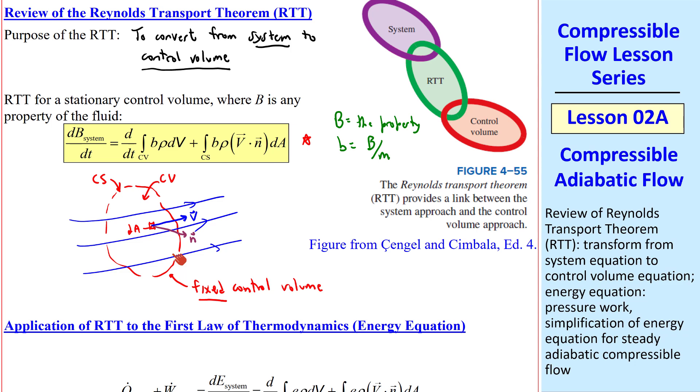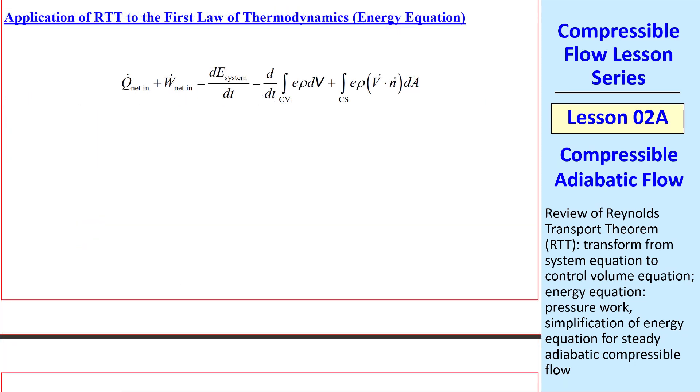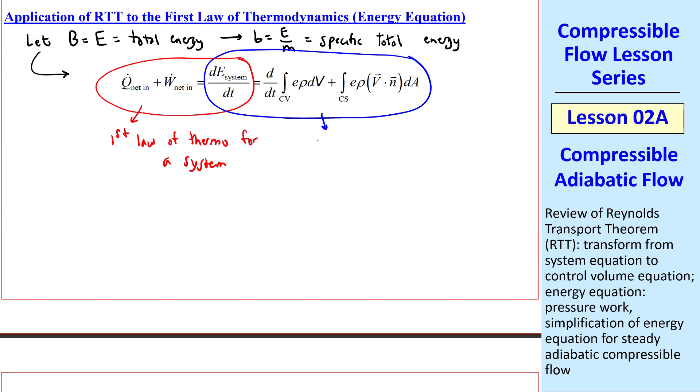Now let's apply the Reynolds transport theorem to the first law of thermodynamics, or the energy equation. We'll let our uppercase B be capital E, which is total energy, and then little b is thus capital E over M, which is the specific total energy. The Reynolds transport theorem is this portion of the equation I show here. The left side of this equation is the first law of thermodynamics for a system, and then this part of the equation is the first law for a control volume.